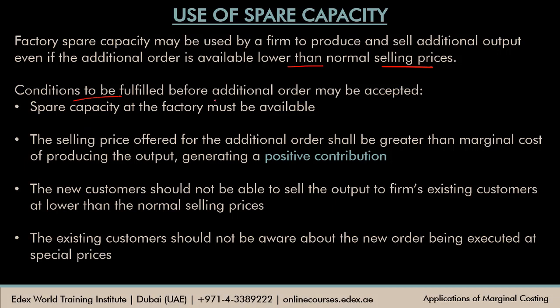Conditions to be fulfilled: spare capacity must be available, which is obvious. If you don't have spare capacity, you cannot accept an additional order, because you're not going to set up additional machinery or additional factory building just to accept additional orders at lower prices. Existing spare capacity has to be there. The selling price that has been offered, even though it's lower than the normal selling price, should be greater than the marginal cost of producing the output.